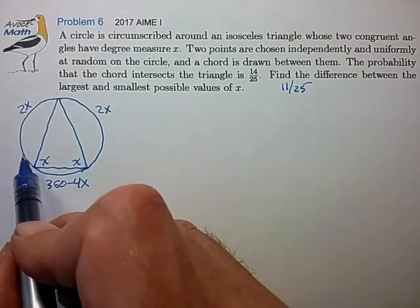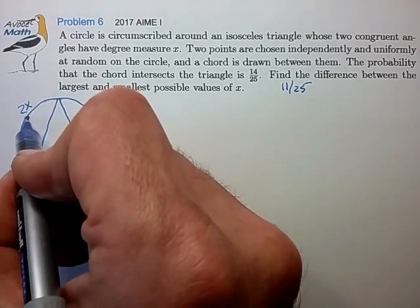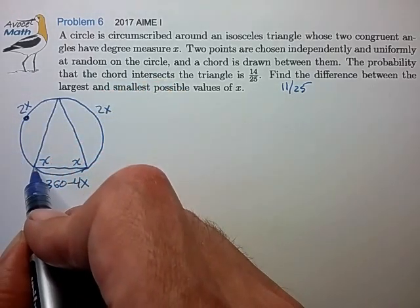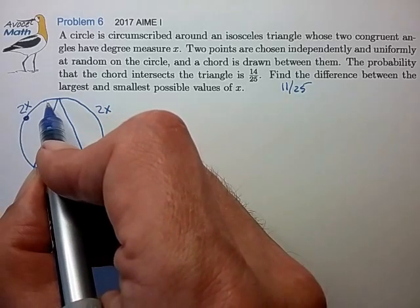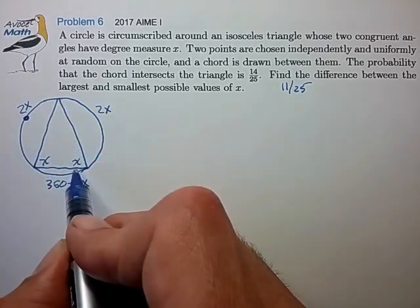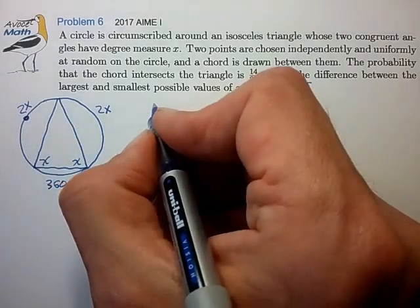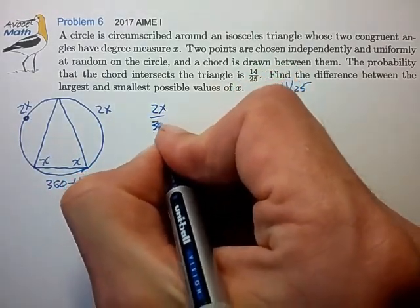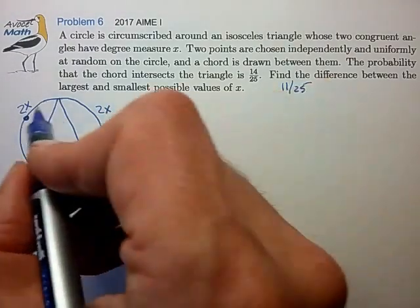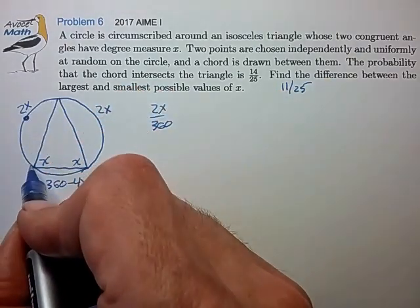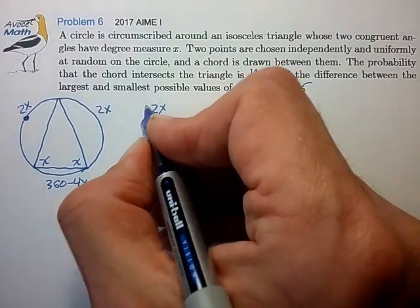Let's look at the case where the first point lies along the 2X segment. Then the probability that that point with the second point will not intersect the triangle is 2X divided by 360, the probability that the first point is within this region, times the probability that the second point is also inside that region. And that's just the square.